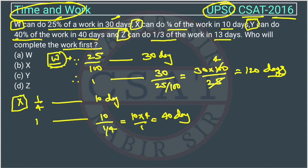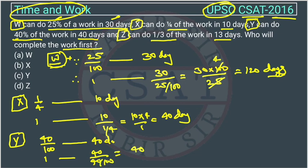For Y, we will calculate. Y is able to complete 40% or we can write 40 upon 100. He is able to complete 40 by 100 work in 40 days. So one work he will complete in 40 upon 40 upon 100 days. This will be 40 into 100 upon 40. This 40 will cut this one. So this will be 100 days.